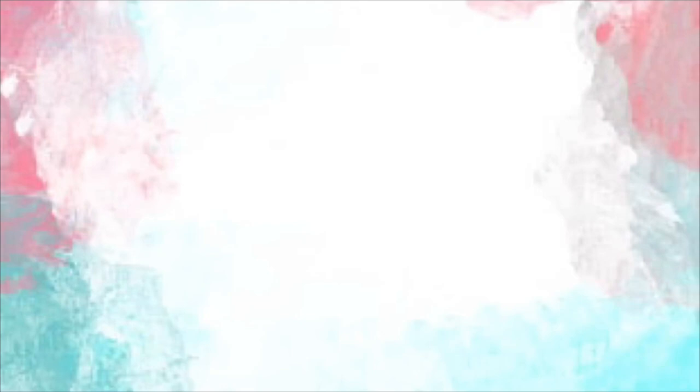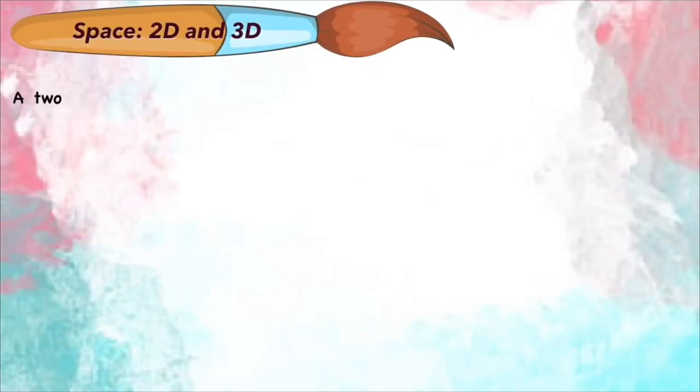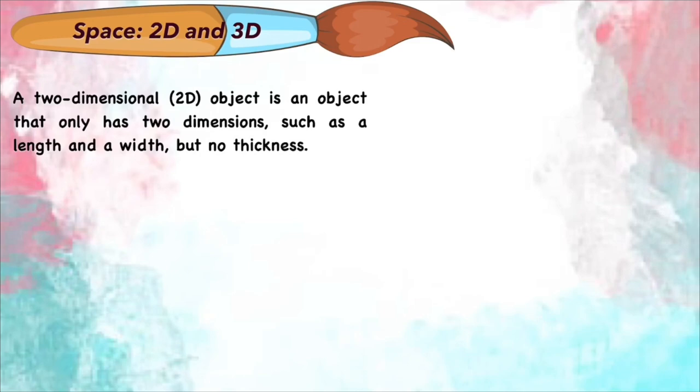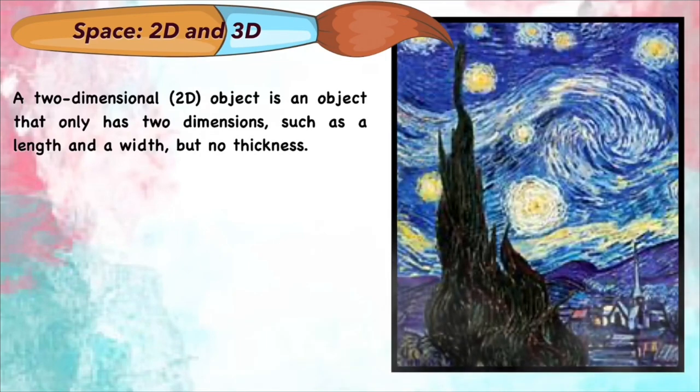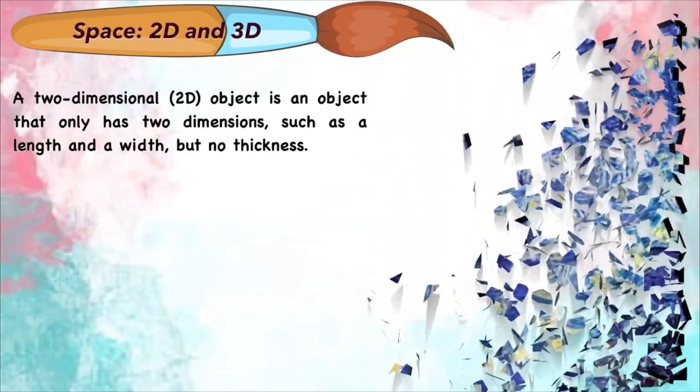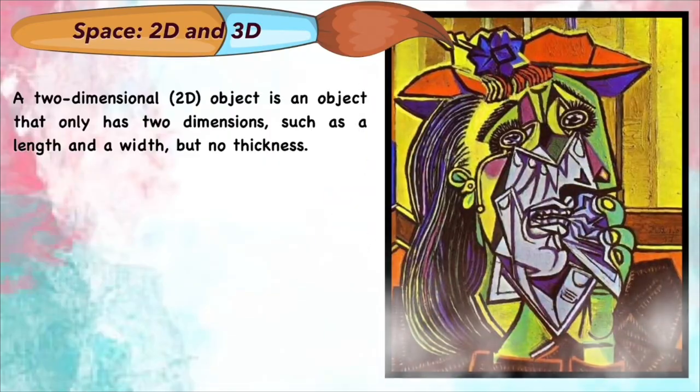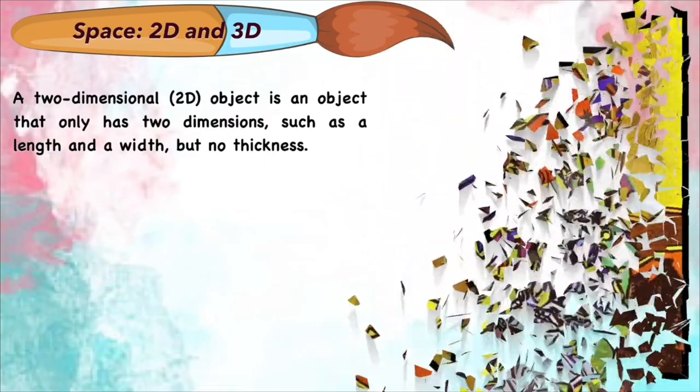Space: two-dimensional and three-dimensional. A two-dimensional or 2D object is an object that only has two dimensions, such as length and width, but no thickness. A three-dimensional or 3D object is an object with three dimensions: length, width, and height.